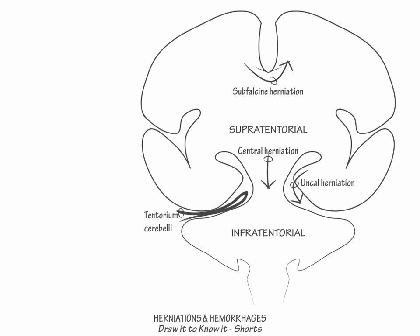Next, let's show the two forms of infratentorial herniation that exist. Indicate that in upward cerebellar herniation, the cerebellum herniates upward into the supratentorial cavity. Then show that in tonsillar herniation, the cerebellar tonsils undergo downward herniation through the foramen magnum.